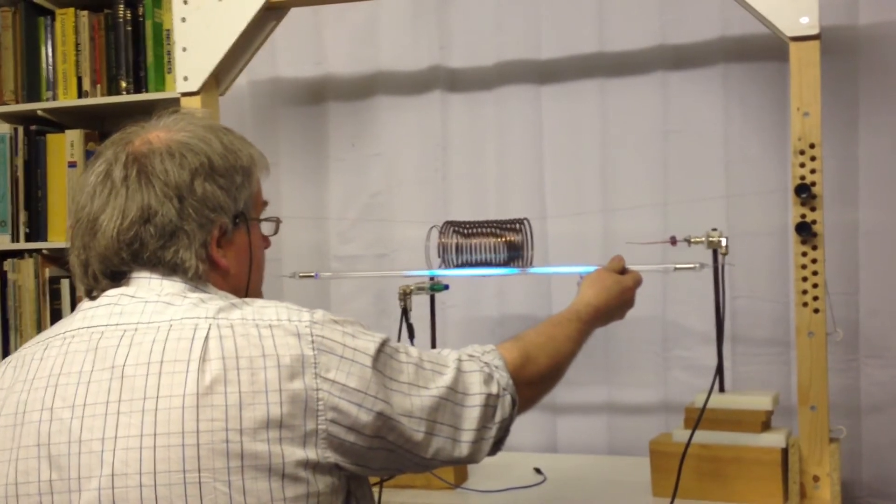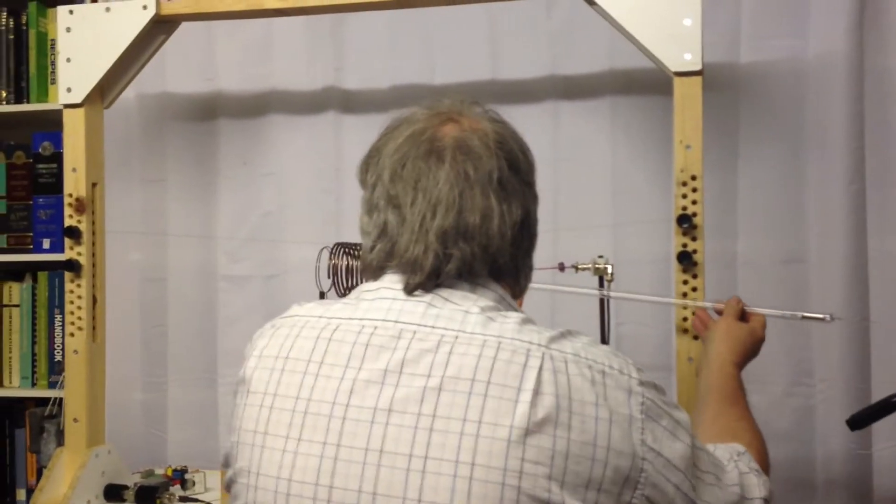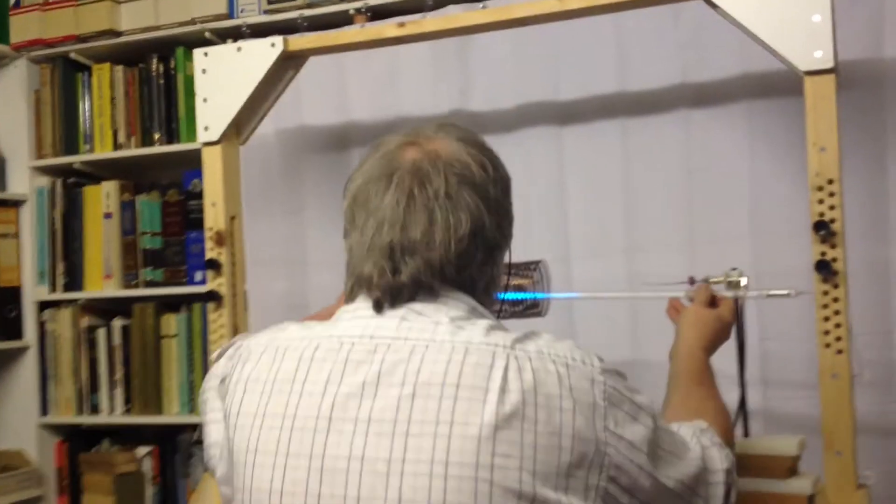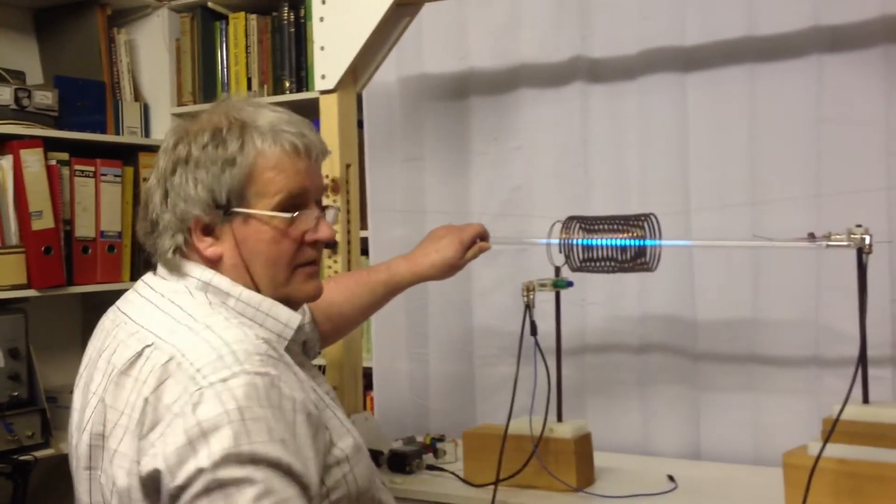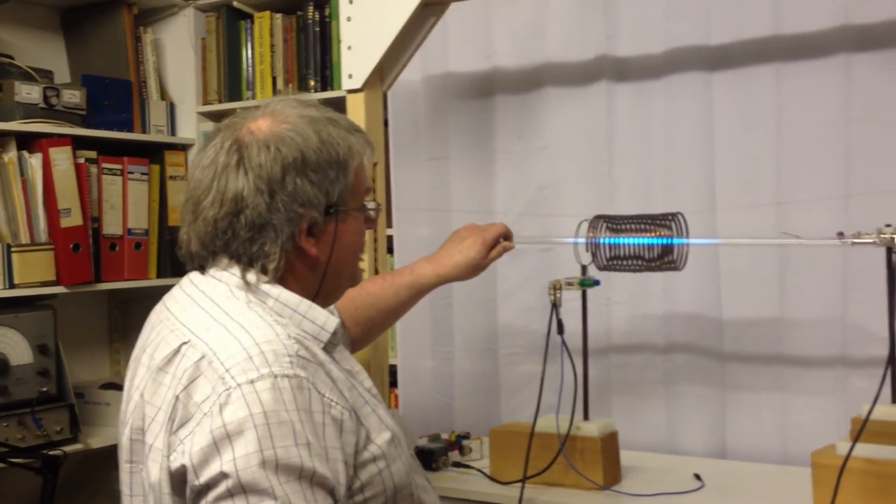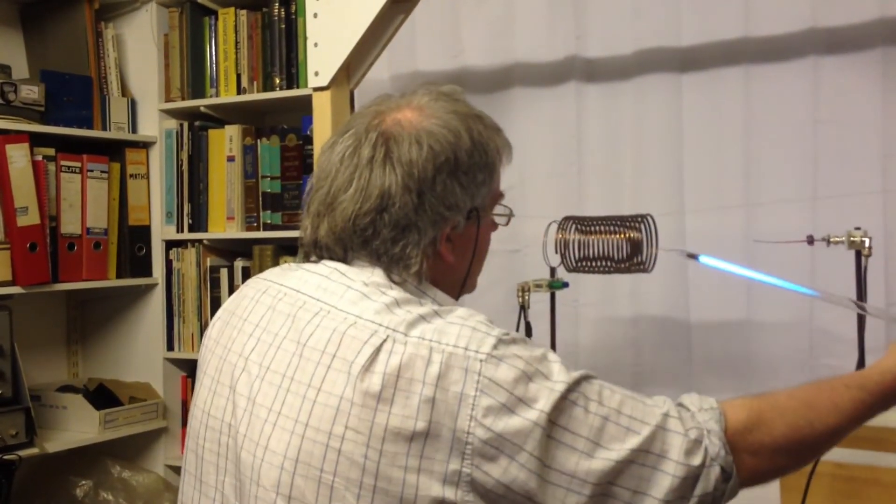That's the inside of the coil. We've also got the standing wave pattern in the coil. Here we go. Through the coil. There you go. In the middle of the coil. Very good. Very pretty isn't it?